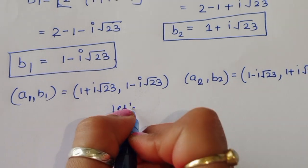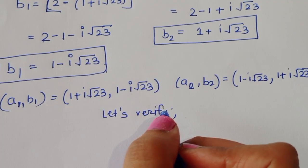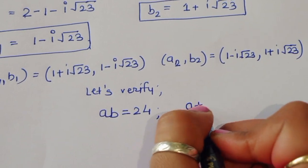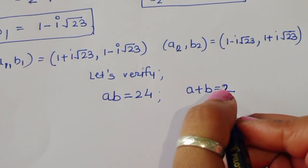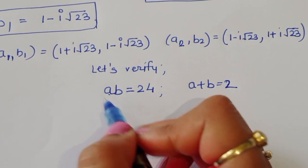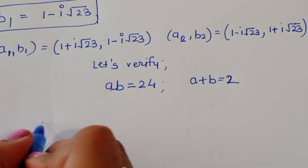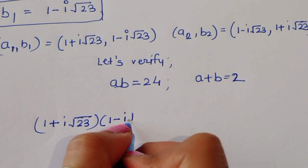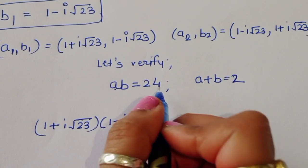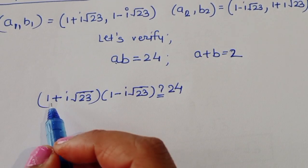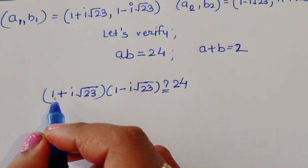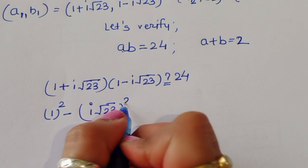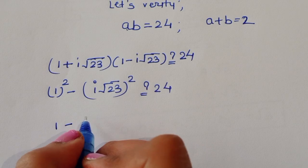Let's verify for a1 and b1. The first equation is ab equal to 24. Substituting a1 and b1: (1 plus i root 23)(1 minus i root 23). This is of the form (a plus b)(a minus b) equals a squared minus b squared, so 1 squared minus (i root 23) squared equals 1 minus i squared times 23.